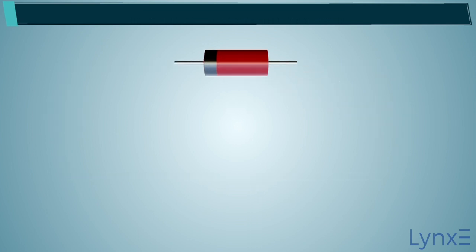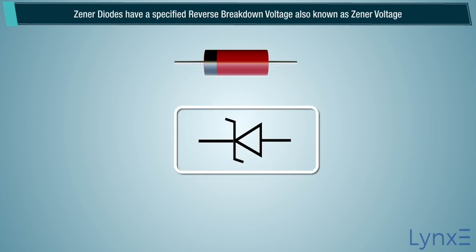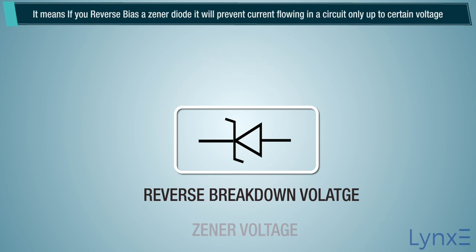The symbol for the Zener diode is represented as shown. Zener diodes have a specified reverse breakdown voltage, also known as Zener voltage.